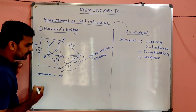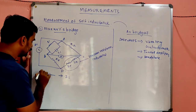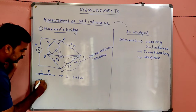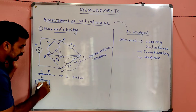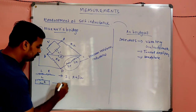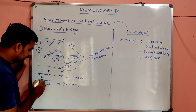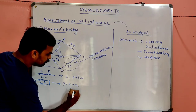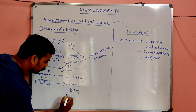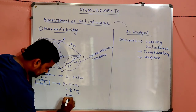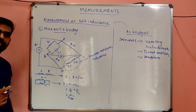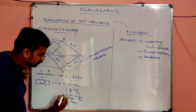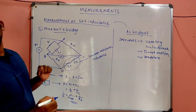Before going to the derivation, remember: if R and L are in series, Z = R + jωL. If R and L are in parallel, we use admittance Y = Y1 + Y2, where Y1 = 1/(jωL) and Y2 = 1/R. If R and C are in series, Z = R − j/(ωC). If R and C are in parallel, Y = 1/R + jωC.